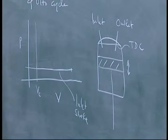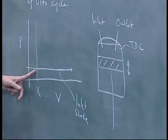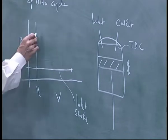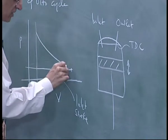A stroke is simply the movement of the piston. During the inlet stroke the air is taken in; the inlet valve is open and the outlet valve is closed. At the end of this stroke, you close both valves and then you have an adiabatic compression.